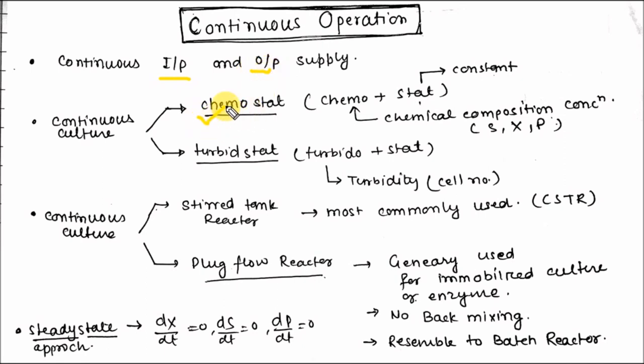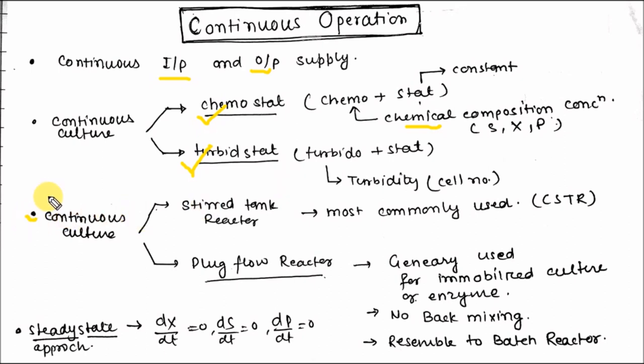In chemostat, the chemical composition or concentration is kept constant by limiting the concentration of the limiting nutrient. In turbidostat, the turbidity or cell number is kept constant by varying the flow rate. Continuous culture can also be divided into tank culture and plug flow reactor.